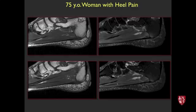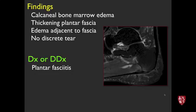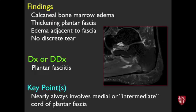Next case, 75-year-old woman with heel pain. On MRI there's bone marrow edema in the calcaneus, thickening of the plantar fascia, and edema adjacent to the fascia without a discrete tear. Plantar fasciitis. This almost always involves the medial — so-called intermediate cord — of the plantar fascia rather than lateral, and tends to be proximal, commonly associated with reactive bone marrow edema.